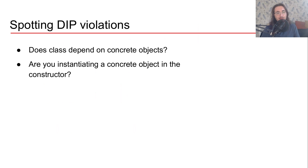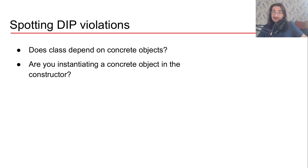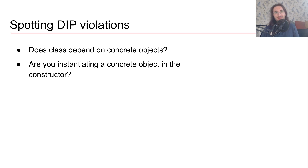Let's ask ourselves how we can spot DIP violations. We should ask a couple of questions. First, does a class depend on concrete objects? If that's the case, we may be violating the Dependency Inversion Principle. The second question is: are you instantiating a concrete object directly in the constructor? If that's the case, then you're probably violating DIP. Let's get into our Python example where all these things are going to become a little bit clearer.